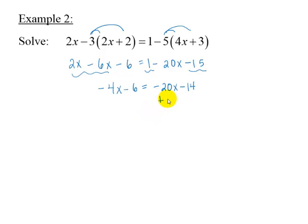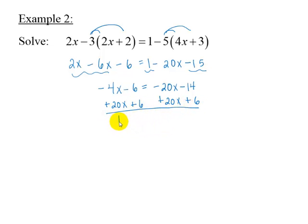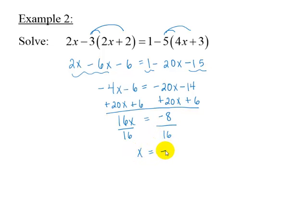Add 20x to each side to collect the variable terms to one side, and add 6 to each side to collect the constant terms to the other side. Simplifying gives us 16x equals negative 8. Divide each side by 16 to get x equals negative 8 divided by 16, or negative one-half. So the solution set is negative one-half.